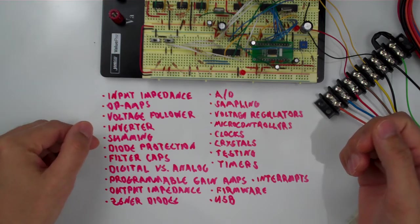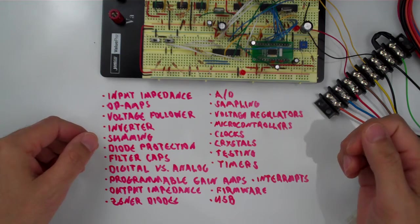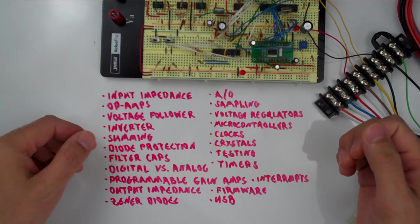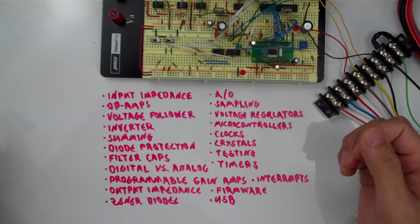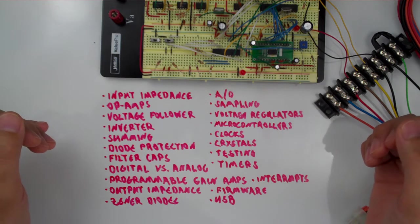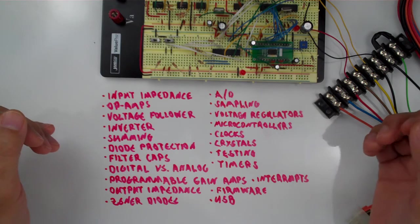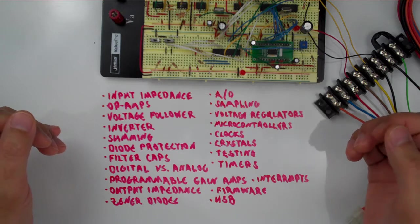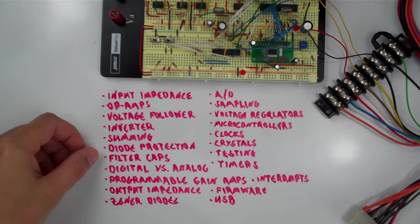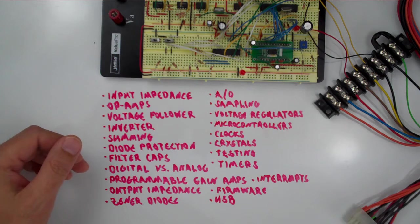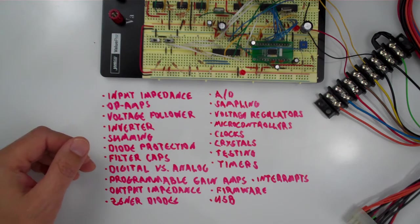You're going to learn about diode protection, how to use diodes to protect your input signals. So that if you accidentally apply too high of a voltage to your circuit, your circuit would be protected. You're going to learn about filter capacitors and how to make sure that you have good power supply signals coming into your circuits.